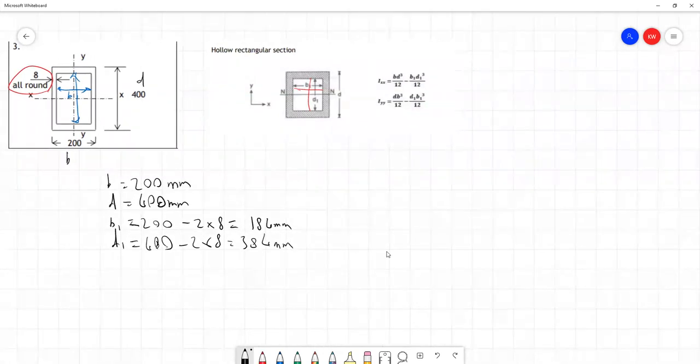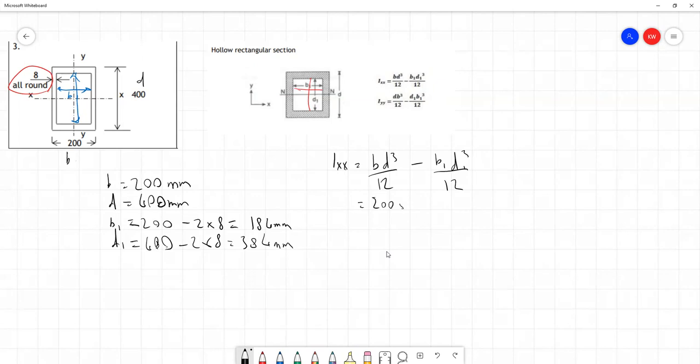So we now have all pieces of information we need to find the second moments of area. We've got a formula here for the second moment of area about the x-axis, so we can put in our values. Let's write it out in full and put in our numbers. So we have 200 times 400 cubed over 12 minus 184 times 384 cubed over 12. Now if we put all of that into our calculator, which I will do just now.